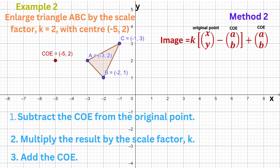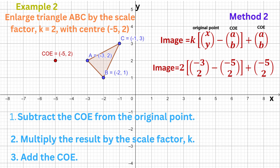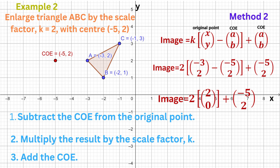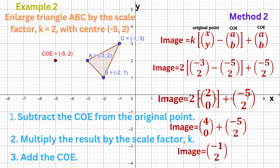We'll begin by calculating the image of A. The original point (x, y) is (-3, 2). First subtract the centre of enlargement (-5, 2): we have -3 minus -5, which is +2, and 2 minus 2, which is 0. So the original point minus the centre of enlargement is (2, 0). Multiply (2, 0) by the scale factor 2 to get (4, 0). Add (4, 0) to the centre of enlargement (-5, 2): 4 + (-5) = -1 and 0 + 2 = 2. So the image of A is (-1, 2).